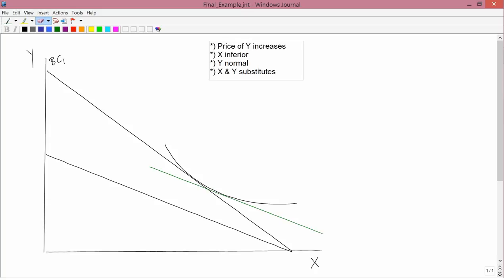In our final example of inferior and normal goods and complements or substitutes, we'll approach things in a somewhat different way. Suppose I want you to draw a graph with the following four characteristics: the price of y increases, x is an inferior good, y is a normal good, and x and y are substitutes.